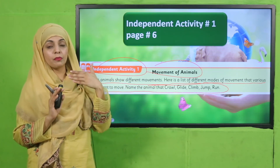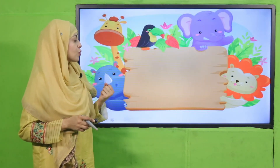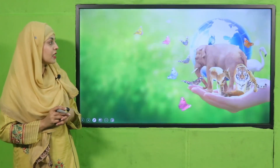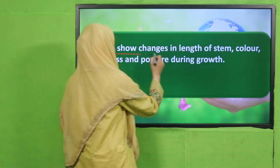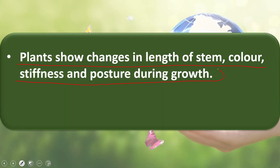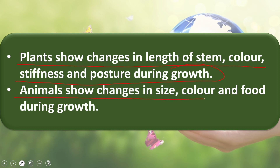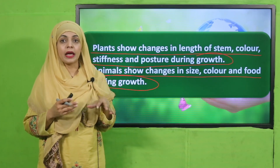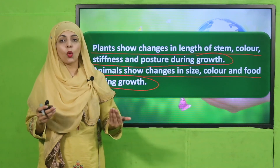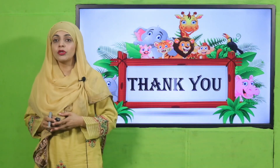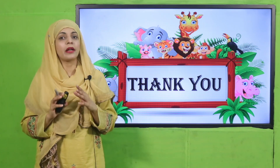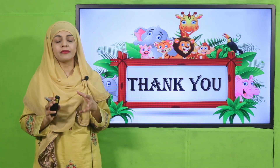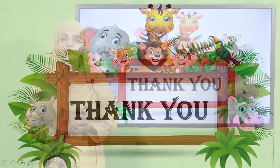Wrap-up: today we learned that plants show changes in stem length, color, stiffness, and posture during growth, whereas animals show changes in size, color, and strength during growth. I hope you enjoyed today's lecture. Do perform this activity at home and in class with your friends — you will definitely enjoy it. Keep everyone around you safe. Have a good day, thank you so much.